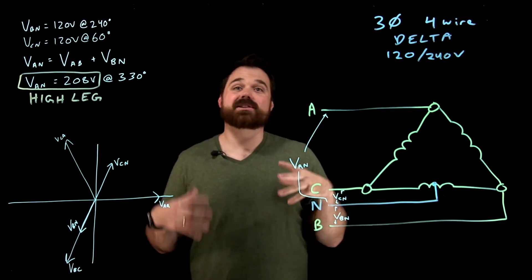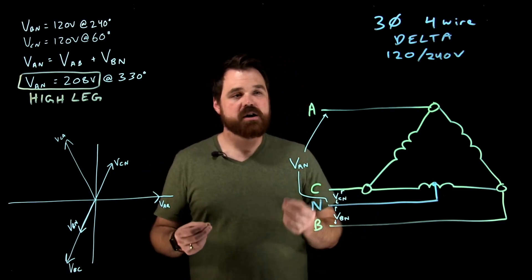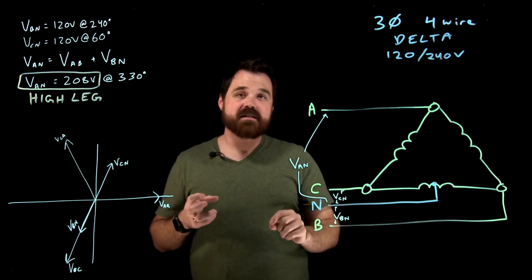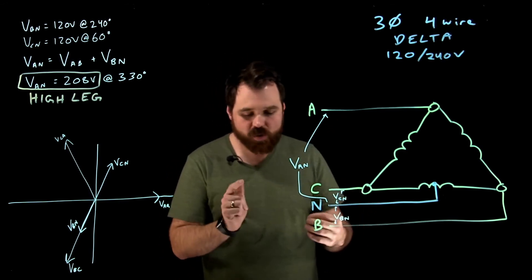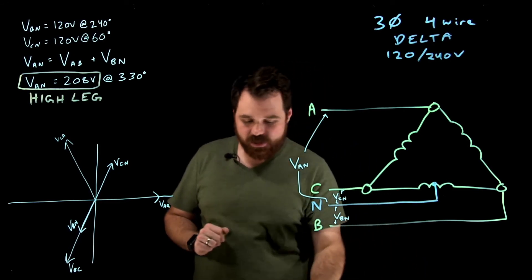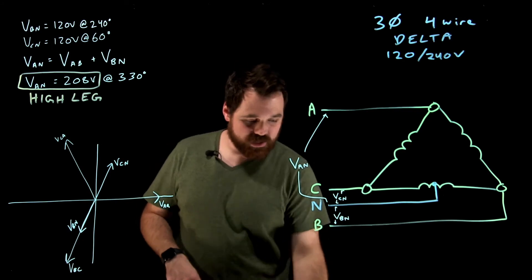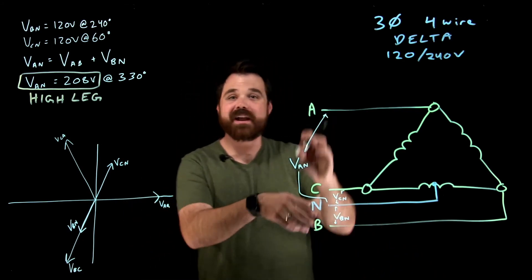It also tells us that the system shall be constructed so that you can never, ever, ever connect A to N for a load. Alright, so what ends up happening is this.